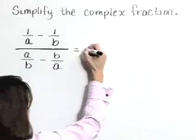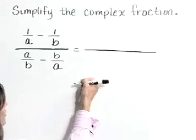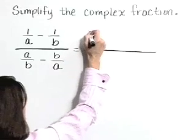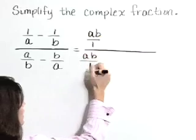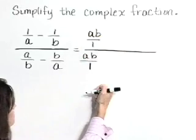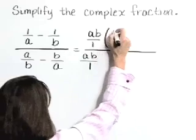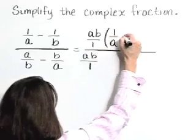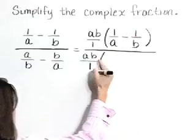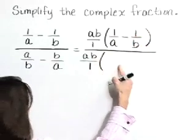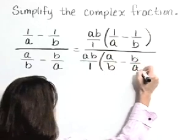So let's take this complex fraction, and we're going to multiply both the numerator and denominator by AB. And I'm going to write that as AB over 1, so I can keep things straight. So we'll take that AB over 1 times our original numerator, 1 over A minus 1 over B. And we'll take AB over 1 times our original denominator, which is A over B minus B over A.